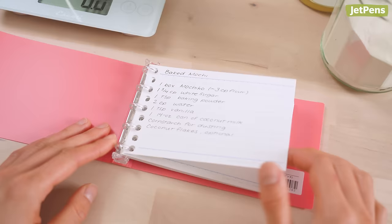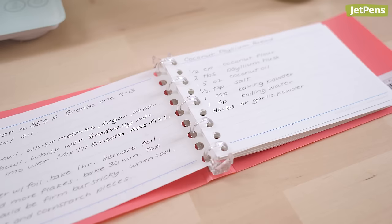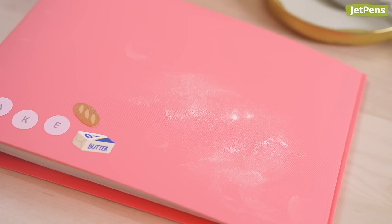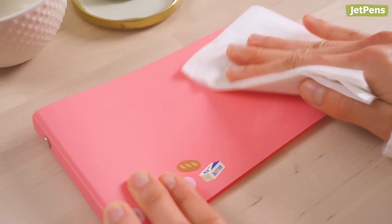You can write down recipes and rearrange them quickly. Just open the rings by pinching the tabs at the top and bottom. We also appreciate its plastic cover because it's easy to wipe clean.